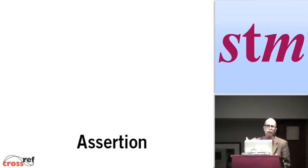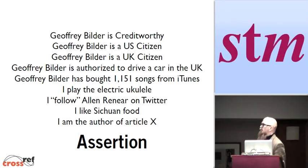Finally, another term and a very important term in our context: assertion. An assertion is something that you might make about a subject or about an identity that refers to a subject. For instance, these are assertions: Jeffrey Builder is creditworthy, he's a U.S. citizen, he's a U.K. citizen, both of which are true. Authorized to drive a car, has bought 1,151 songs from iTunes, plays the electric ukulele, follows Alan Renier on Twitter, I like Szechuan food, I am the author of Article X. One of the things I want to illustrate here is that there's a difference in the kinds of assertions being made. Some are externally made - some external entity is making an assertion about me. Jeffrey Builder is creditworthy. And some are self-assertions. I like Szechuan food.